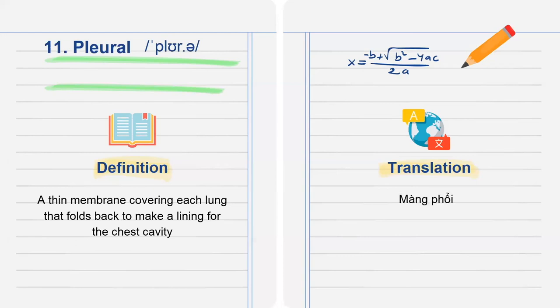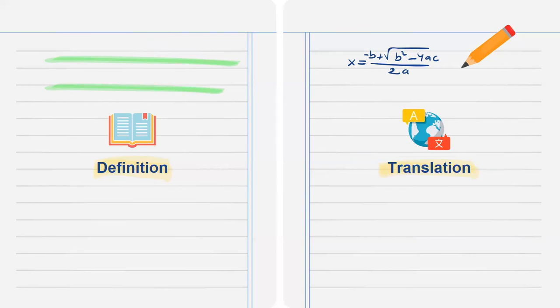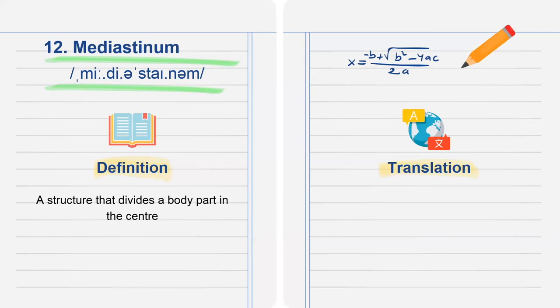And the last word in this presentation is mediastinum, a structure that divides a body part in the center. Translation: trung thất.